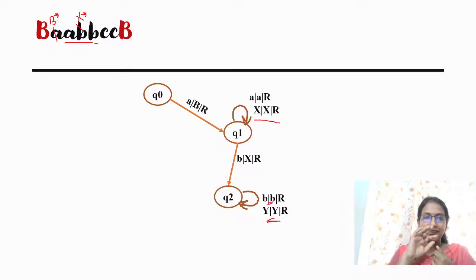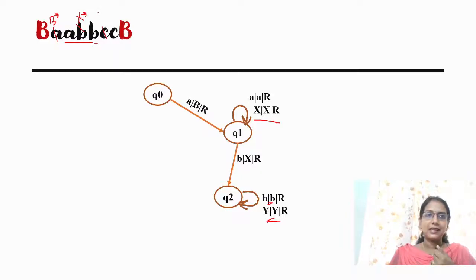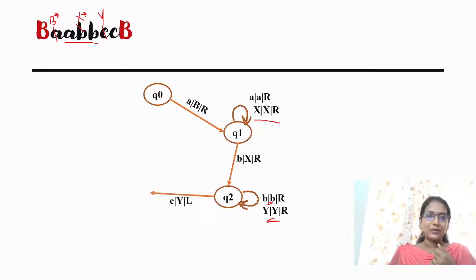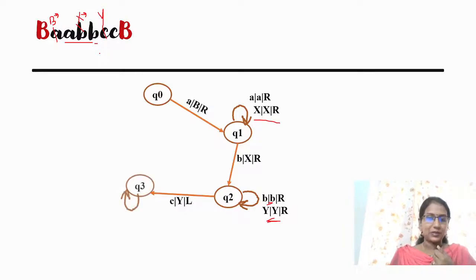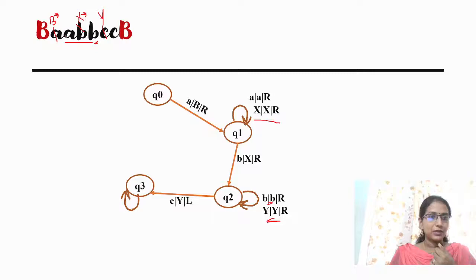We move to the right. We find the first C, replace C with Y, then move to the left. Going to the left side — if you look at the left side, you can see b and X, then Y, then a and X.